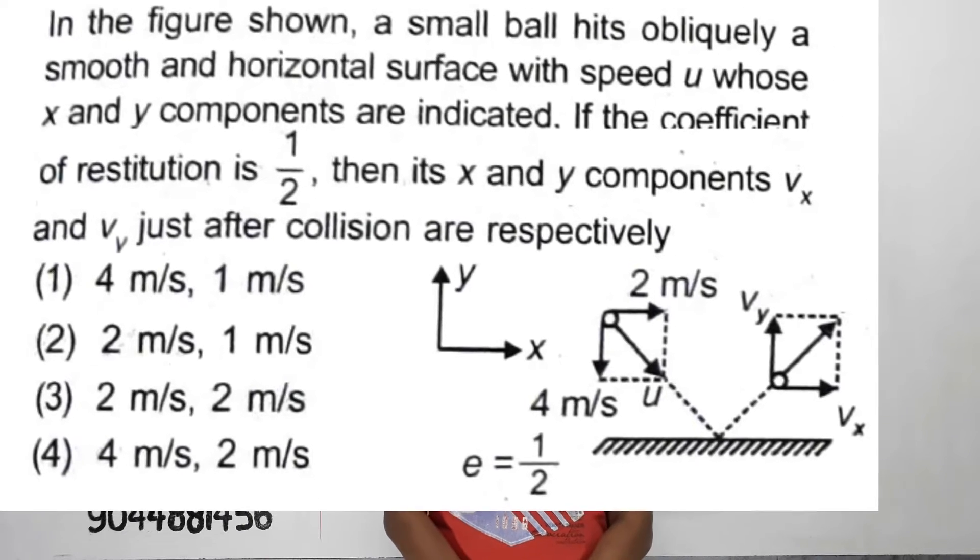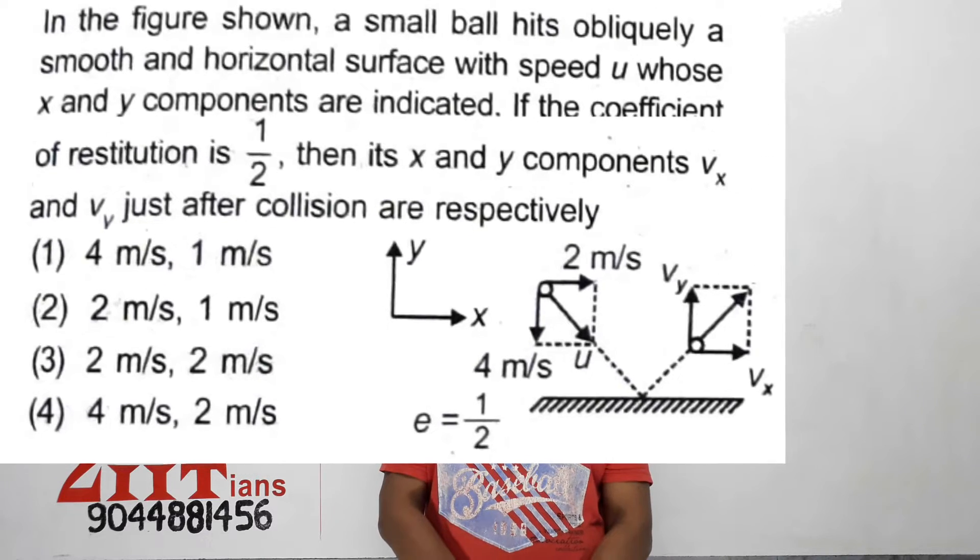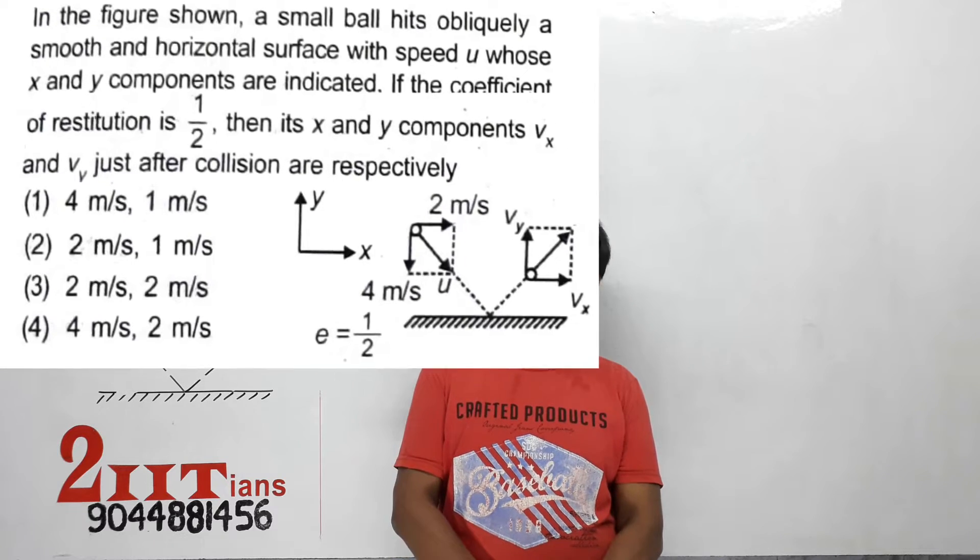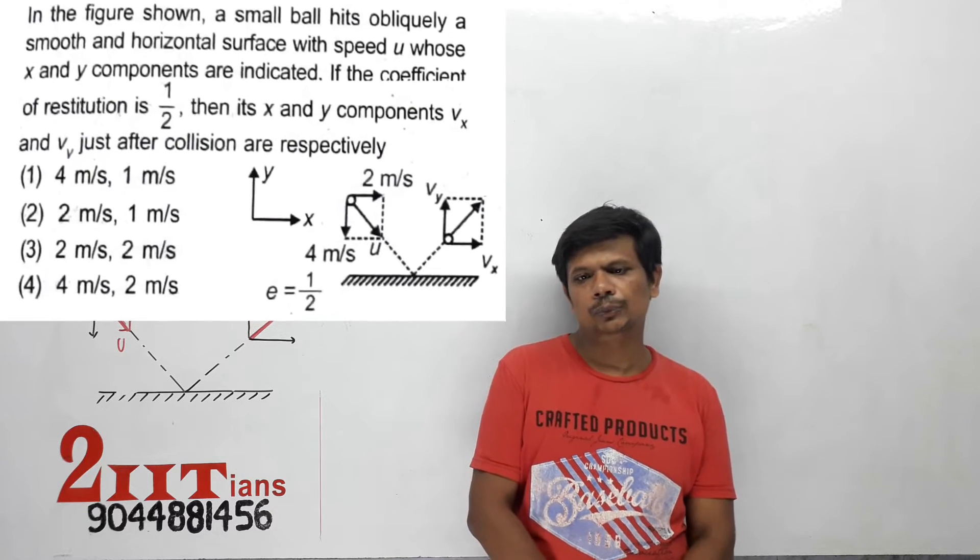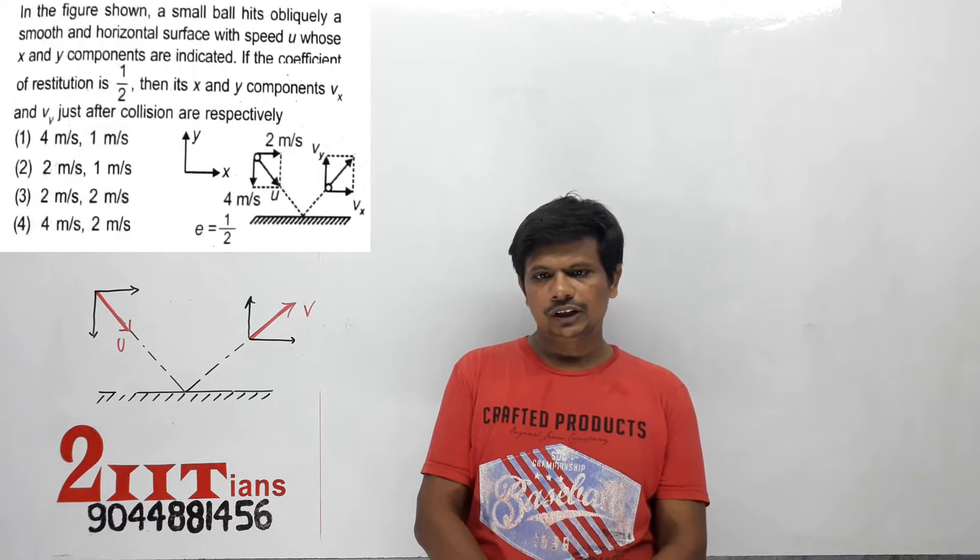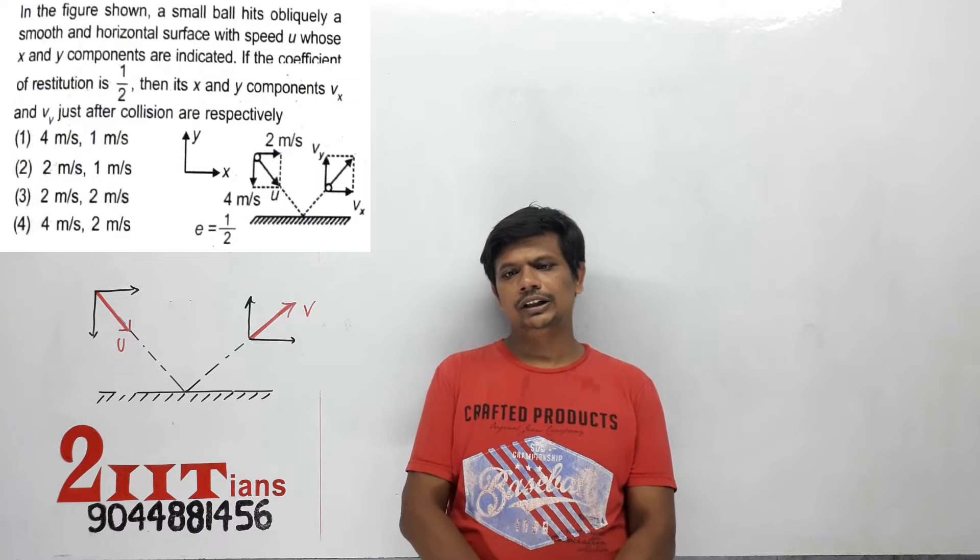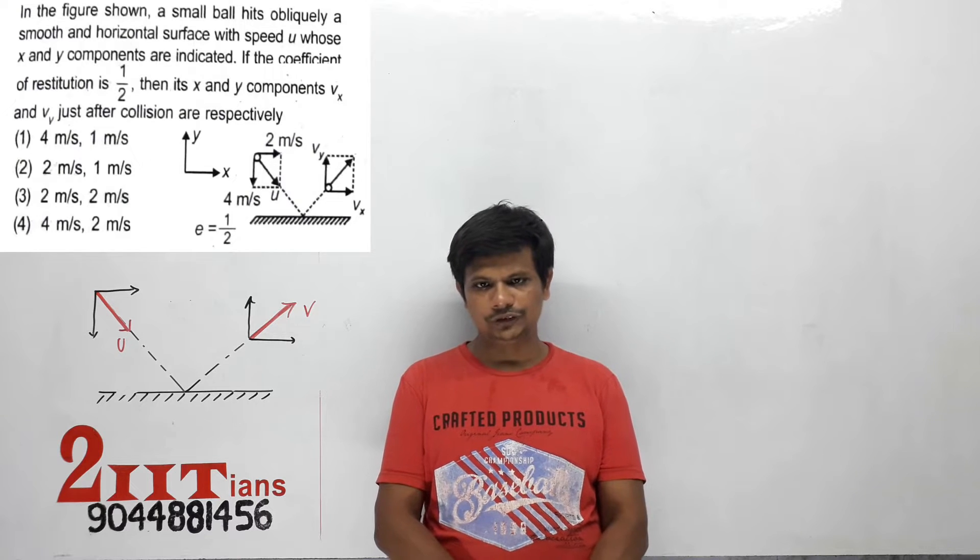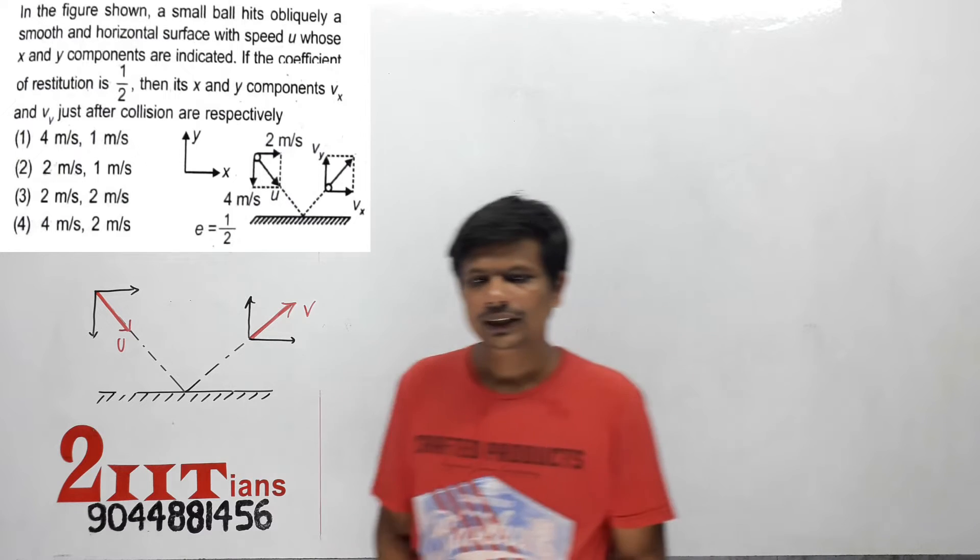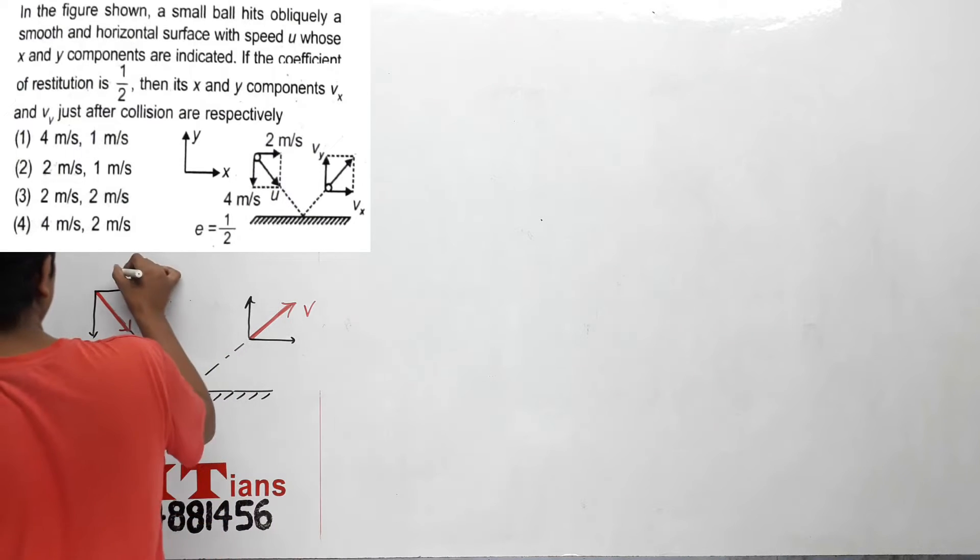In the figure shown, a small ball hits obliquely a smooth and horizontal surface with speed u whose x and y components are indicated. If the coefficient of restitution is 1/2, then its x and y components vx and vy just after collision kya hongi? Yani ki aapko diya gaya hai ux.